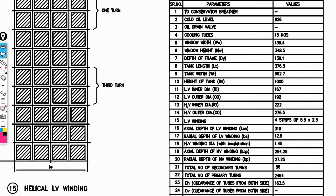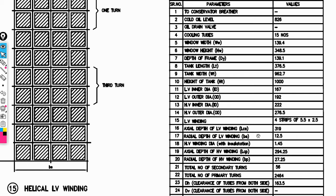Also, high-voltage winding inner diameter circle, high-voltage winding outer diameter circle, high-voltage winding, low-voltage winding, axial depth of winding (LCS), and radial depth of winding are very important. Total number of primary turns and total number of secondary turns are also very important.